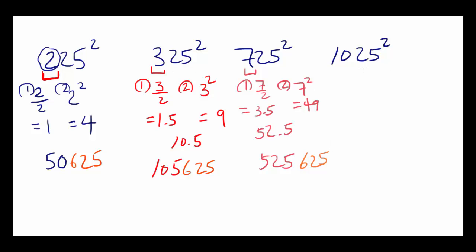The last one, let's try to do this in our head. You got 10. Divide by 2, you get 5. Square 10 and you get 100. 100 plus 5 is 105. Multiply by 10. And you put 625 at the end.